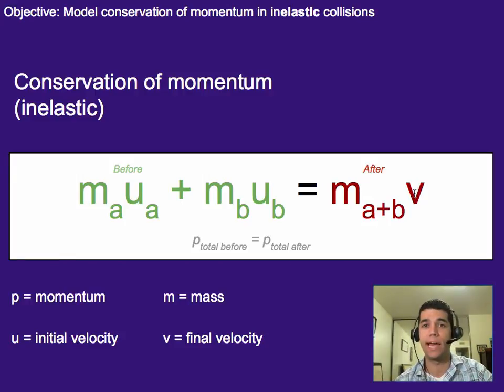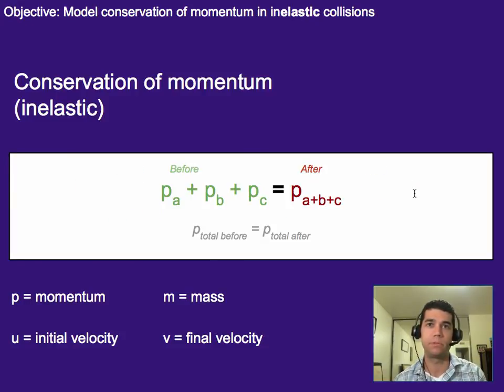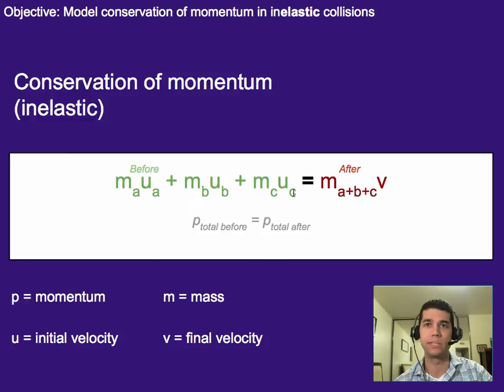If instead we had three things colliding, so imagine three carts colliding into each other and sticking, that would be simple. Again, we had three things before, so you would add the three momentum up. And then after, there's only one thing, so you just have one momentum term after. But to figure out the mass for this term, you'd have to add those three things together. So what it would look like is this: you add the three things together before, and then you have the masses combined after times their final velocity all together.